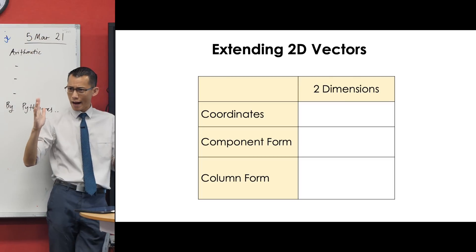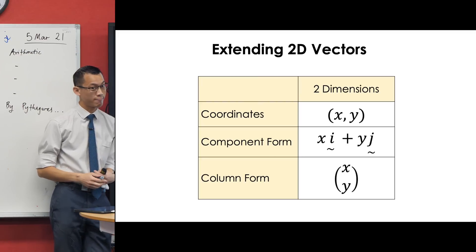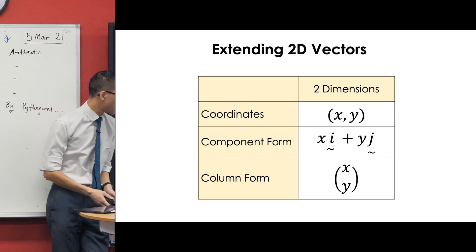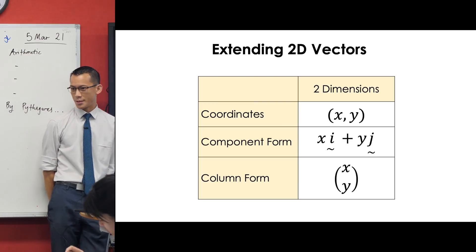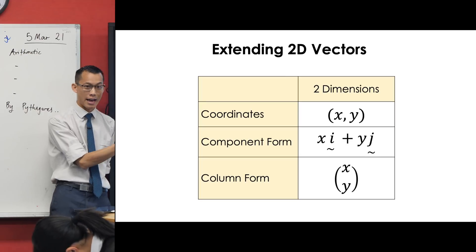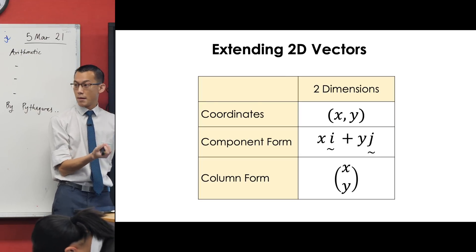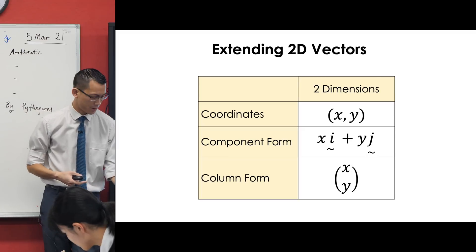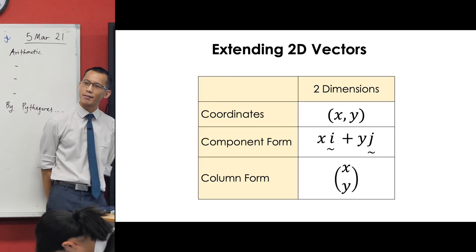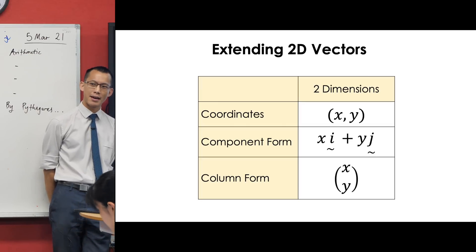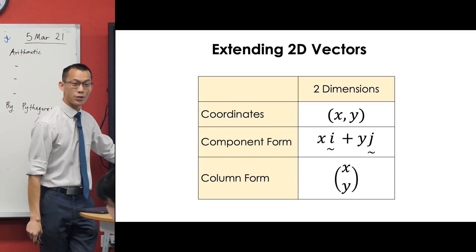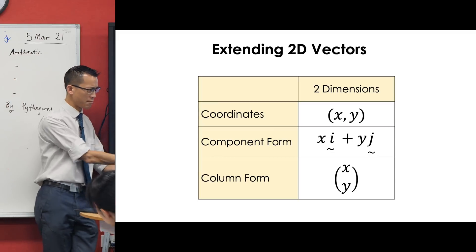And then lastly, column form. We're still going to use brackets, just like in coordinates, but what do we do differently? Yeah, it's called column form, right? So we pop it in this vertical arrangement here. And for funsies, we often actually call these things matrices. That's a terminology thing you don't really have to worry about, but those of you who do any kind of mathematics at university, when you do that topic called linear algebra, they might stop calling these column form.